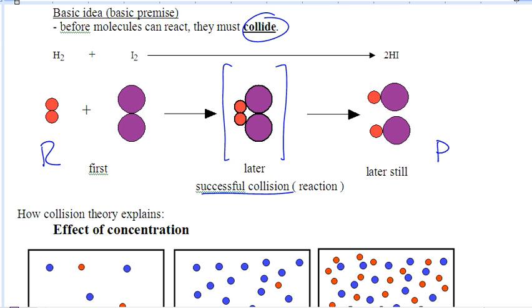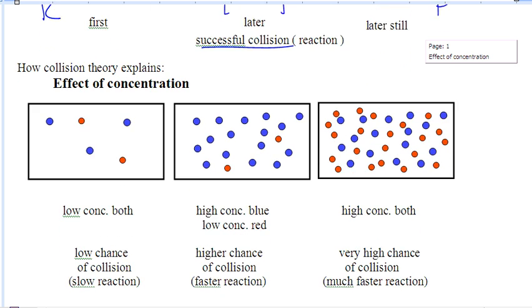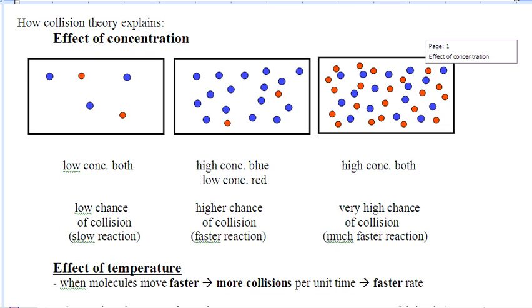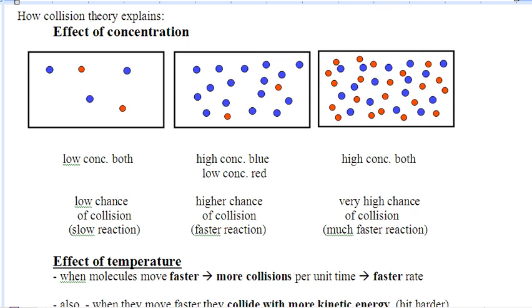So the first thing that we can do is change the concentration. The higher the concentration, the faster the rate. Why? Because the higher the concentration means there's more reactants, and if you have more reactants, they will be able to collide with each other more often. You increase the chance of a successful collision.